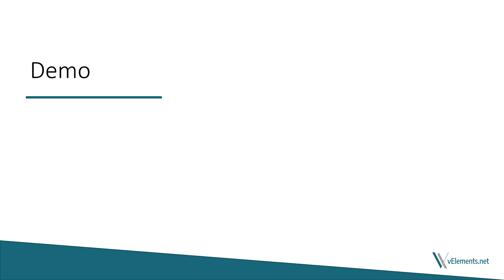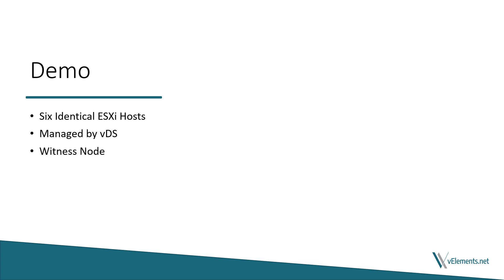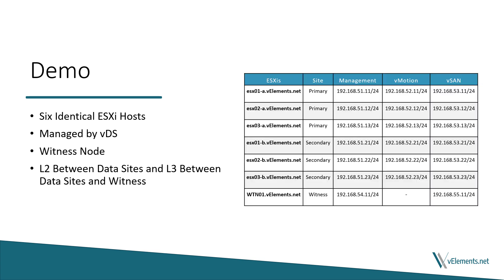Now it's time to walk through a demo to show how to configure vSAN stretch cluster. In this demo, I have six identical ESXi hosts that are members of a distributed switch. I have configured management, vMotion, and vSAN VMkernel adapters on all ESXi hosts except one, to show you how to configure it. I have already deployed a witness node and added it to vCenter. The network across two data sites for management, vSAN, and vMotion is stretched layer 2, and between the data site and the witness is layer 3. You can also review this IP addressing example to better understand how to assign addresses to management, vMotion, and vSAN VMkernel ports.